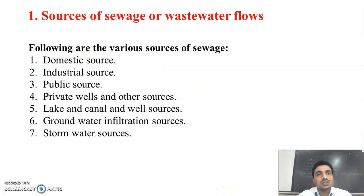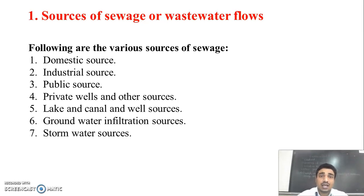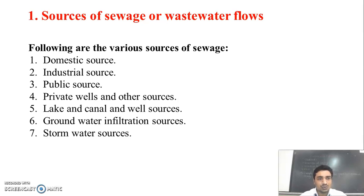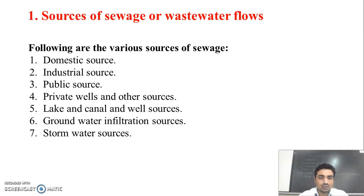First, the sources of sewage or wastewater. There are various sources from which sewage or wastewater is generated: domestic sewage, industrial sewage, public sewage, then private wells and other sources, lake and canal and well sources, then groundwater infiltration sources, and storm water sources. These are the various sources of sewage. Now we will discuss each one in detail.